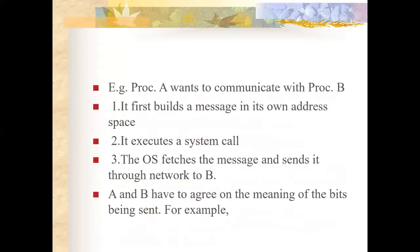What are the elements of inter-process communication? For example, if procedure A wants to communicate with procedure B, it first builds a message in its own address space, then executes a system call. The OS fetches the message and sends it through the network to B. A and B must have agreed on the meaning of the bits being sent.